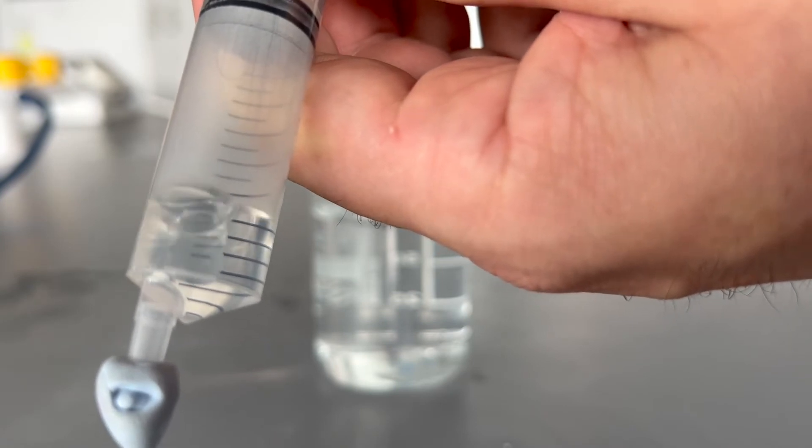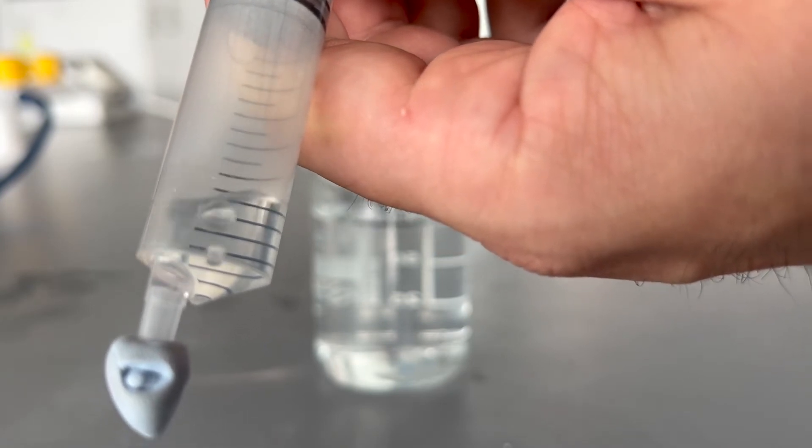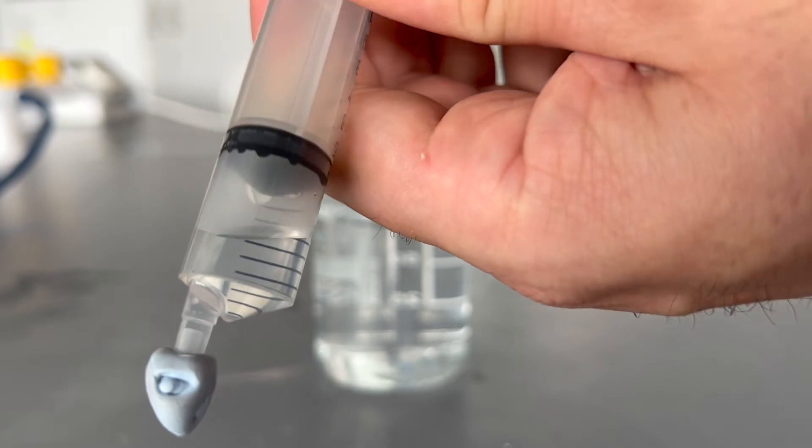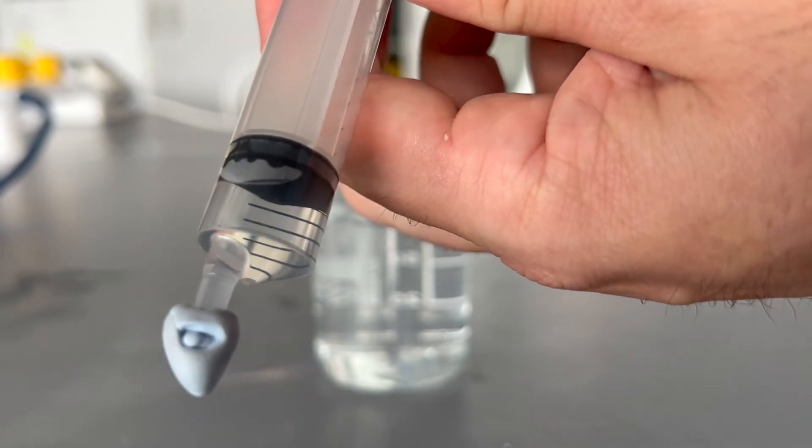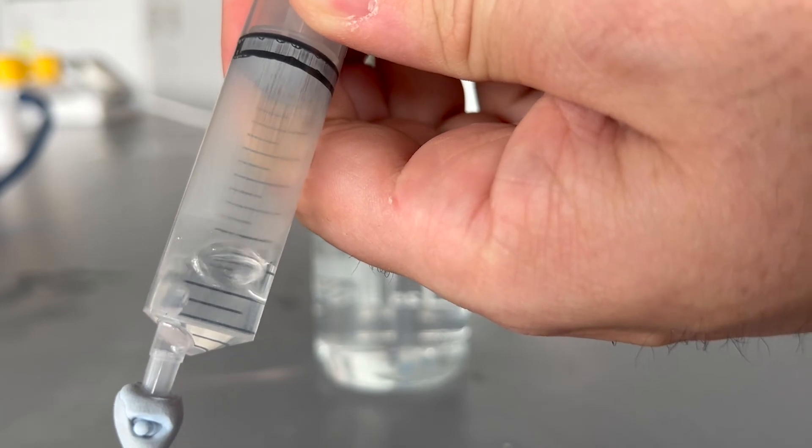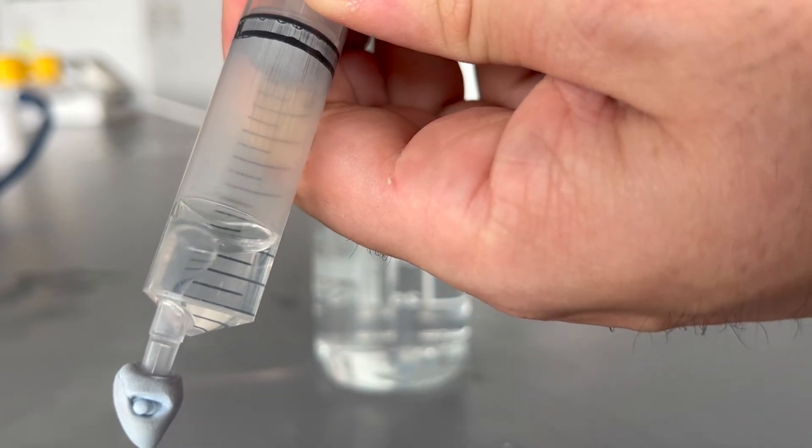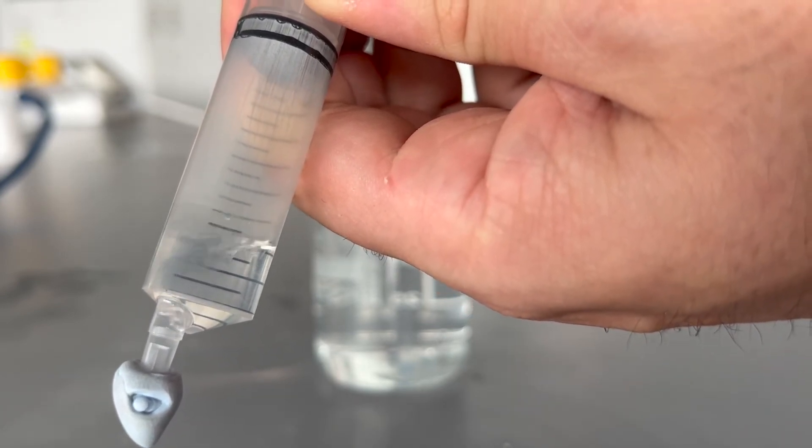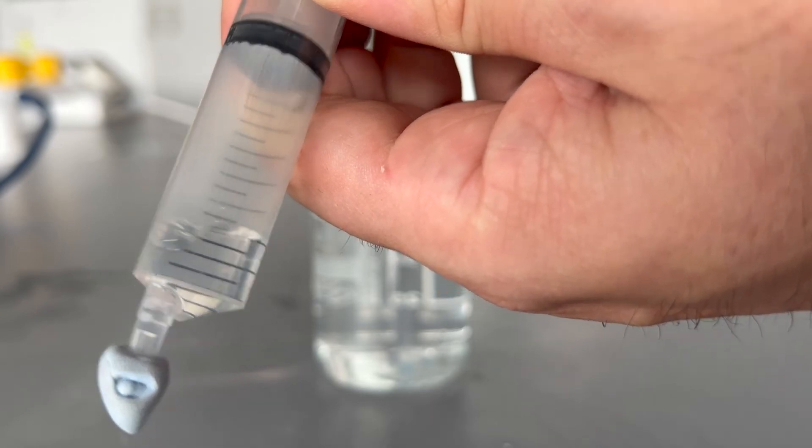So water boils at a lower temperature when the pressure is lower. That's what we're seeing there. So the water is not 100 degrees, it's lower than that. Not normally boiling at atmospheric pressure, but when I pull on the syringe and reduce the pressure inside the syringe, the water is made to boil.